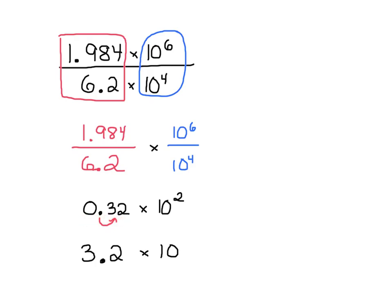How do we get from 0.32 to 3.2? We move this decimal one spot to the right. In doing so, from 0.32 to 3.2, I made this bigger by one spot — one factor of 10 — which means to counteract that, from 10 to the second I need to get smaller by a factor of 10, which is 10 to the first. I moved my decimal point one time, my result was bigger, so to balance that I reduce the exponent by one. My final answer is 3.2 times 10 to the first.